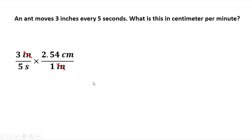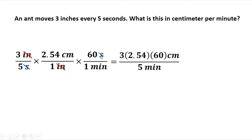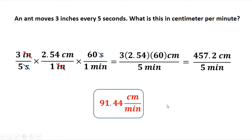That's 2.54 cm. For seconds to minutes, since seconds is at the denominator, during conversion it should be at the numerator so we can cancel seconds. One minute is equivalent to 60 seconds. Simplifying: 3 times 2.54 times 60 equals 457.2, over 5. Dividing gives 91.44 centimeters per minute. That's how to do the conversion.